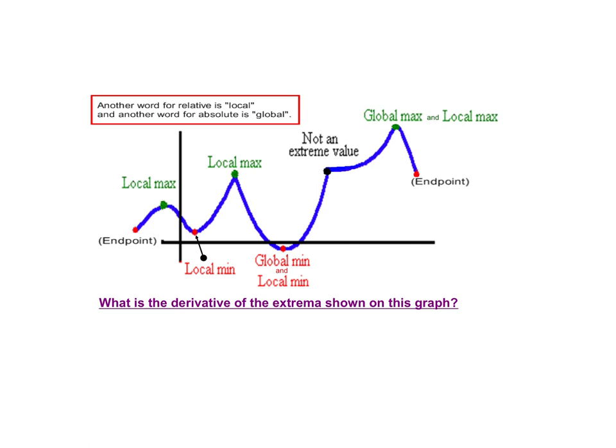Another word for relative is local, which makes a lot of sense because a local max is just a maximum value in that local area. So local and relative mean the same exact thing. Global is like absolute — just like the entire world. So here you can see there's a global minimum right there, and it's also a local min. Up here the graph has a global maximum, which is also a local max — we could say those are absolute max and min.